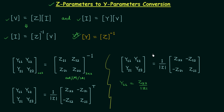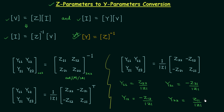Y12 is equal to minus Z12 divided by the determinant. Similarly, Y21 is equal to minus Z21 divided by the determinant, and Y22 is equal to Z11 divided by the determinant. In this way we perform the conversion of Z parameters to Y parameters. This conversion is very important because while solving problems we will first calculate the Z parameters matrix and then obtain the Y parameters matrix.